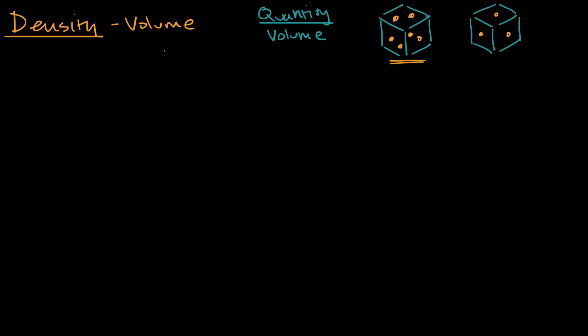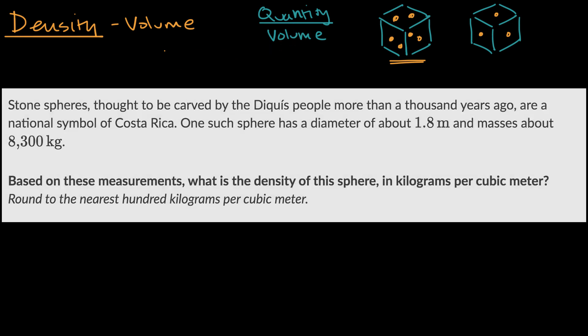Now, with that out of the way, let's give ourselves an example. So here, we're told that stone spheres, thought to be carved by the Diquis people more than 1,000 years ago, are a national symbol of Costa Rica. One such sphere has a diameter of about 1.8 meters and masses about 8,300 kilograms.